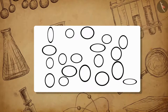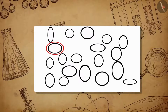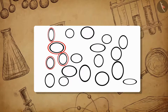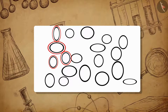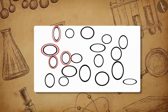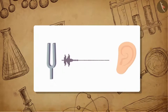A particle of a medium in contact with the vibrating object gets displaced from its equilibrium position. Then it exerts a force on its neighboring particles and displaces them from equilibrium. After displacing its neighboring particles, the first particle goes back to its original state of rest again.